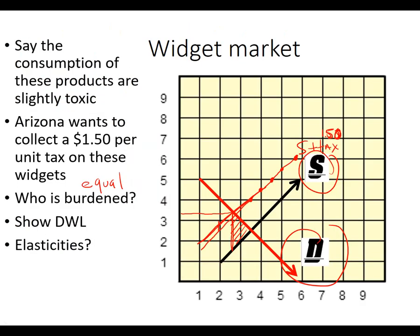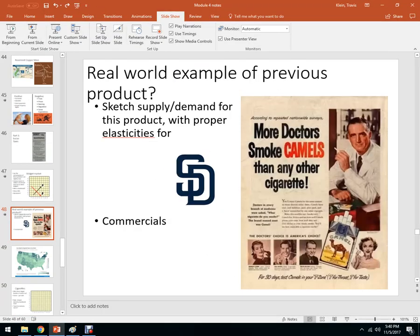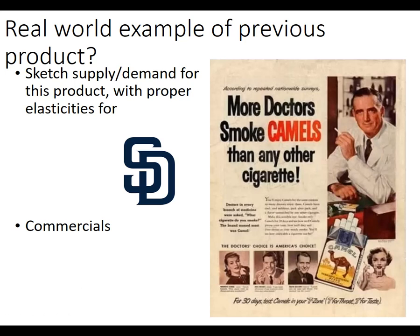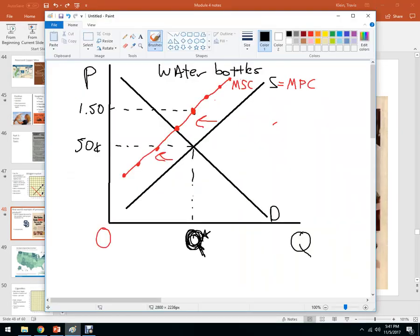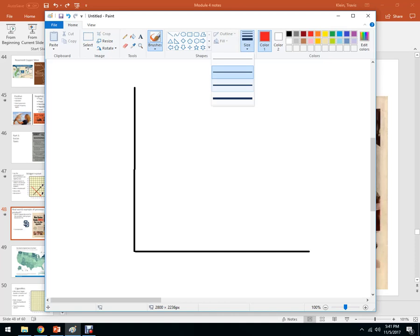Let's look at a real-world example that matters to a lot of people: cigarettes. The Flintstones were advertising cigarettes back in the old days, and campaigns like 'more doctors smoke Camels than any other cigarette' were used. The theory behind taxing cigarettes is to stick it to the tobacco companies, which used advertising to get people addicted — including my grandfather, who started smoking at 13 and it ultimately killed him.